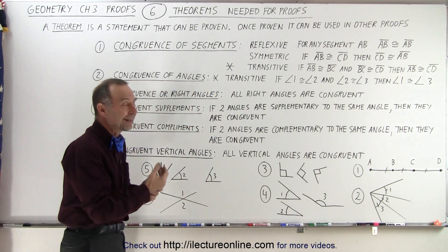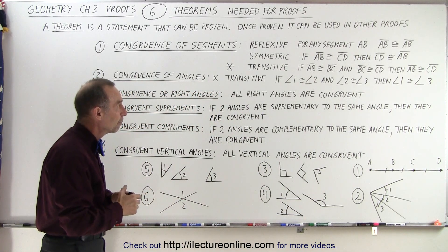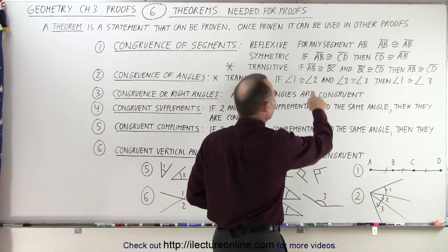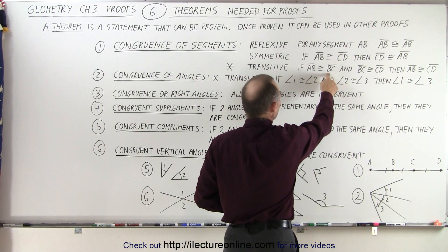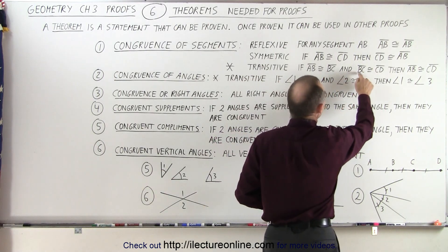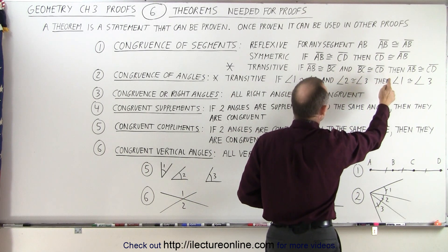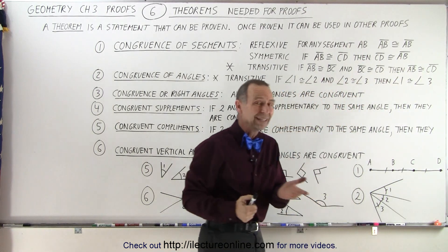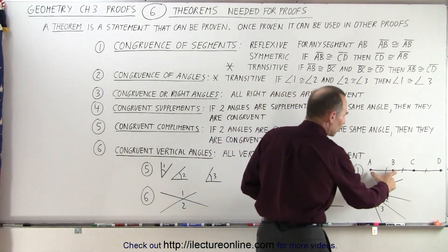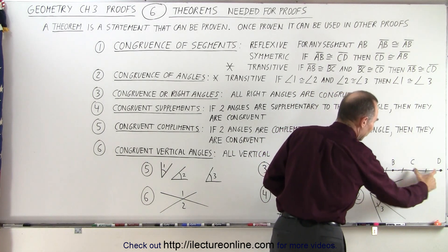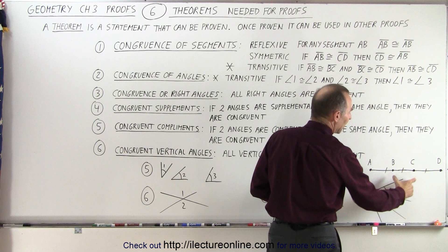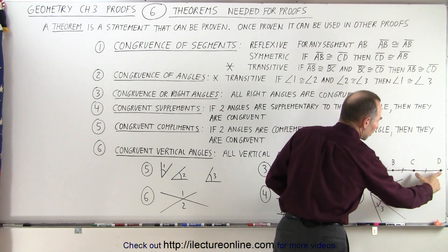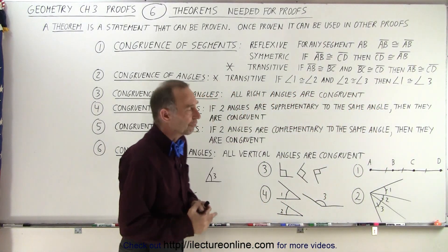What's really useful for us is the following. Let's say we have three line segments: line segment AB is congruent to line segment BC, and line segment BC is congruent to line segment CD. Then we can conclude that line segment AB is congruent to line segment CD. Graphically, let's take a look at that. Here we have three line segments AB, BC, and CD. If AB is congruent to BC, and BC is congruent to CD, then line segment AB must be congruent to line segment CD. And there's our first theorem.